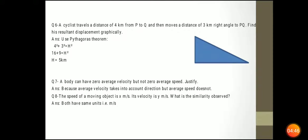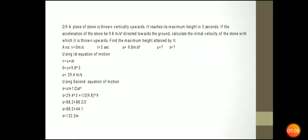The speed of a moving object is x meter per second but its velocity is y meter per second. What similarities do both have? They have the same unit — meter per second.